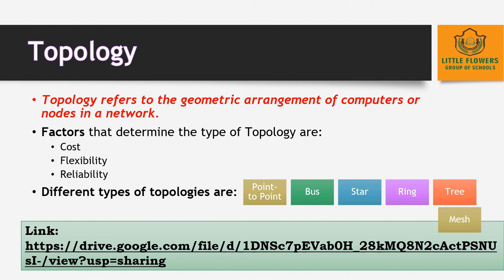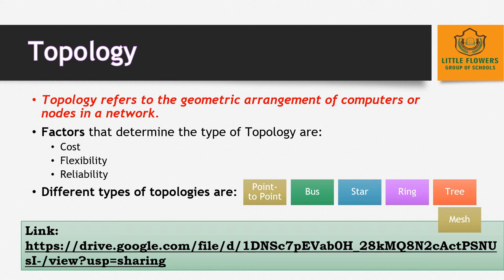Now, topology. Topology refers to the geometric arrangement of computers or nodes in a network. Topology can be physical or logical. Physical topology is the layout of nodes, workstations, and cables. Logical topology is the way information flows among different components. The factors that help determine which topology is best for your network include cost, flexibility, and reliability.